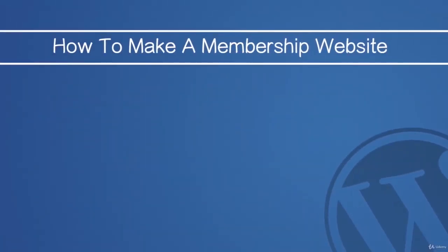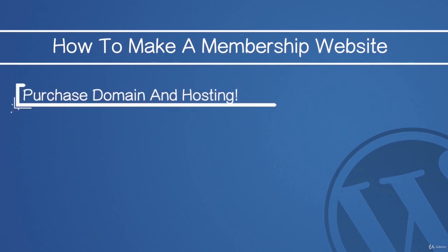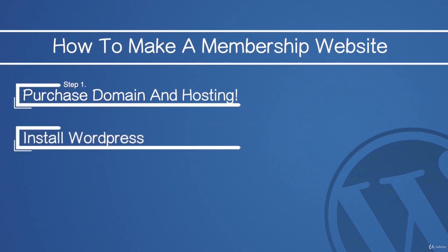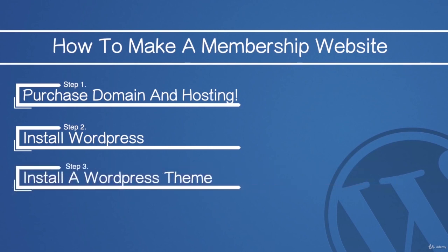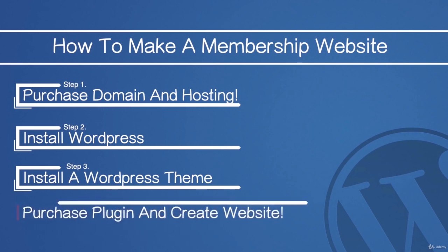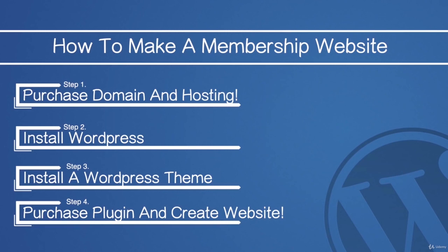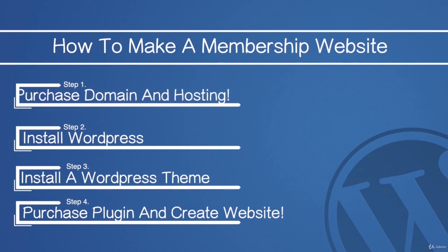The first thing you have to do is purchase your domain and hosting — your website.com or my-membership-website.com. After that we'll install WordPress, which powers more than one-third of the internet — a very valuable skill. Then we'll install a free theme, and after that a plugin that embeds our membership service for a small fee. Within about an hour we'll have our membership website fully operational.